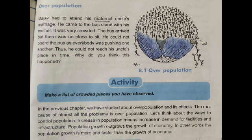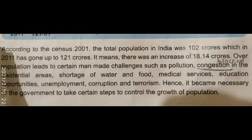Poverty, the standard of living, and illiteracy are also some of the reasons for overpopulation. According to the 2001 census, population of India was 102 crores, which had increased to 121 crores by 2011 — an increase of 18.14 crores. Due to overpopulation, other man-made challenges like pollution, congestion in residential areas, shortage of water and food, improper medical services, lack of education and employment opportunities, and increase in corruption and terrorism take place.